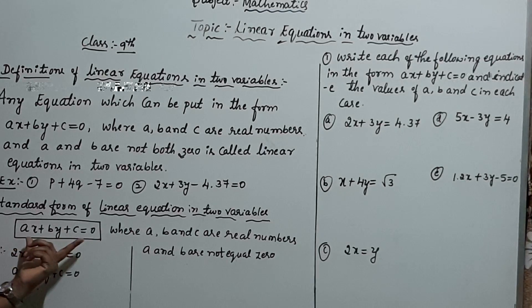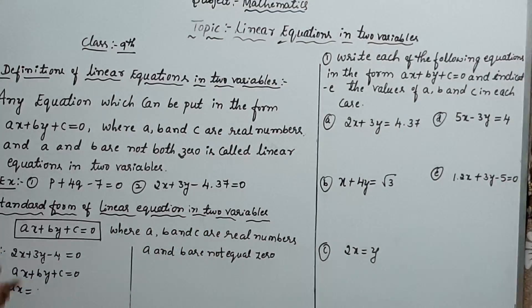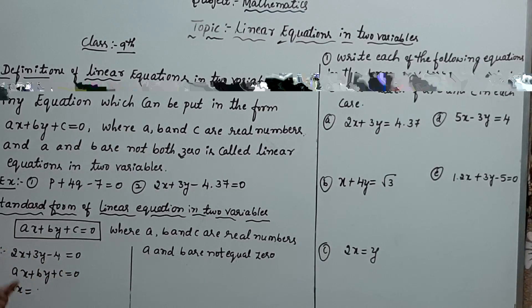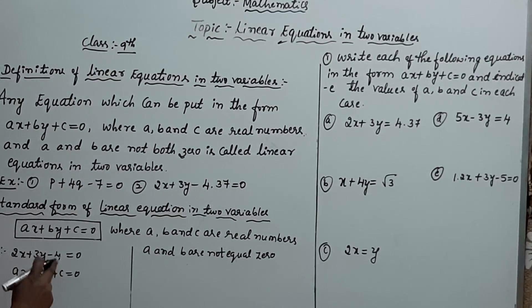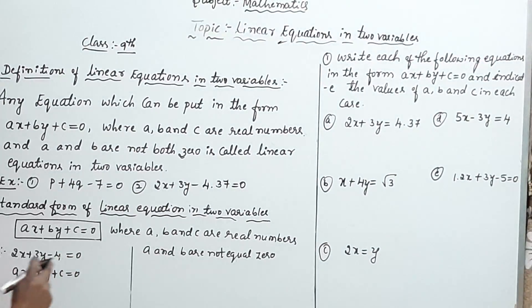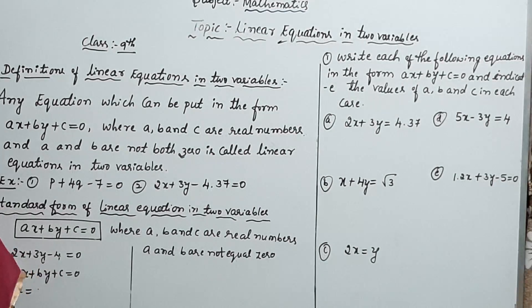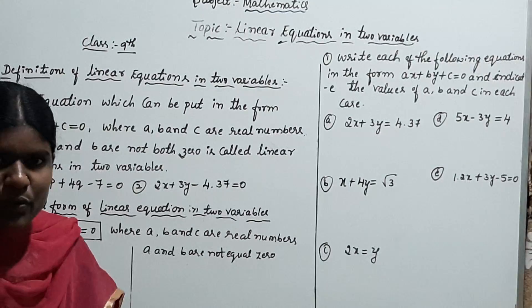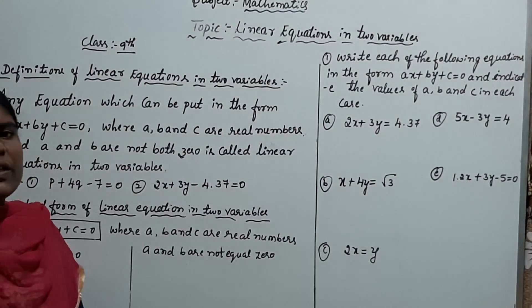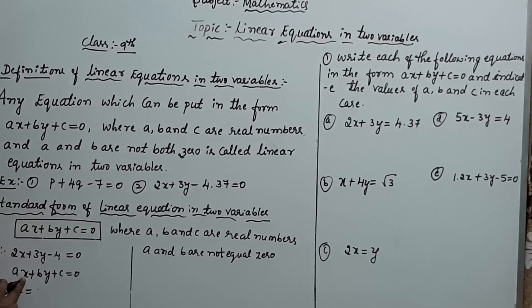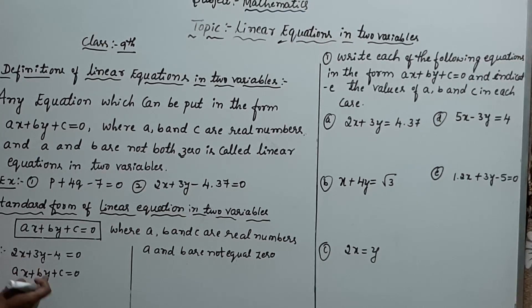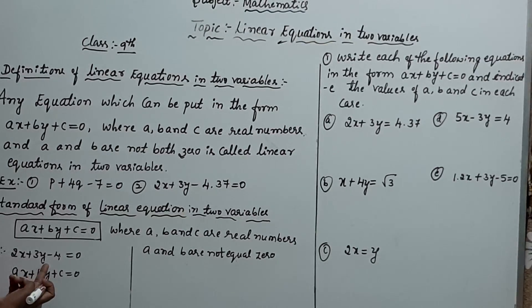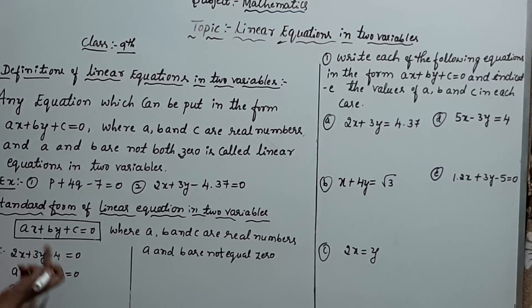Compare with the standard form: AX plus BY plus C equals zero. First term: AX corresponds to 2X, so the coefficient of X is A, and in the given expression the coefficient of X is 2, therefore A equals 2. The coefficient of Y is B, and in the given expression it is 3, so B equals 3. The constant term C is minus 4.